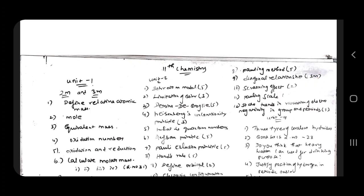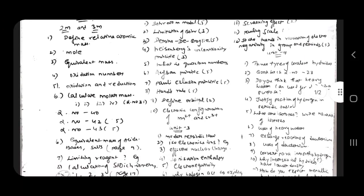State trends in variation of electron negativity in groups and period. Unit 4, three types of hydrates, positive types of hydrates.